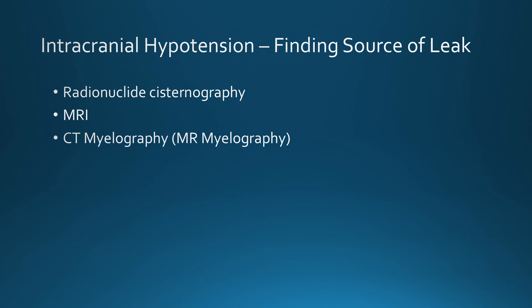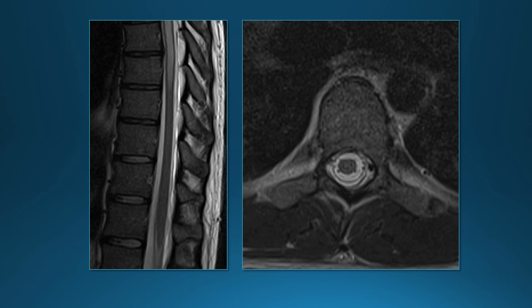We try to find the source of the leak. This has been done with radionuclide cisternography, although it's not used very often. MRI is helpful if there's a very fast leak — we can see extradural accumulation of CSF. The mainstay is CT myelography, and we sometimes also do MR myelography. Probably about half the time we're not able to find the source of the CSF leak. On MR, patients with a fast CSF leak can have extradural accumulations of fluid — this line is the dura, and this is an extradural accumulation of CSF outside the dura.